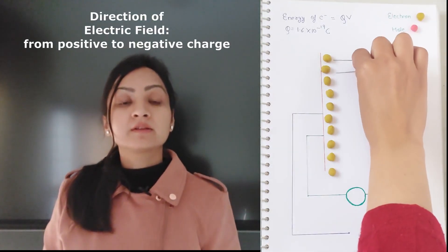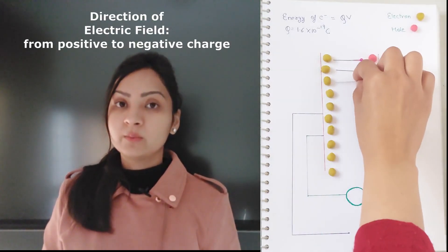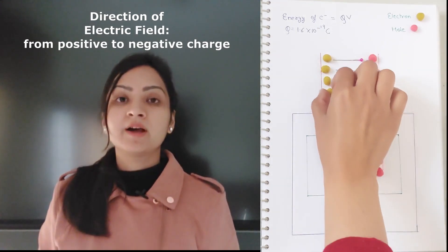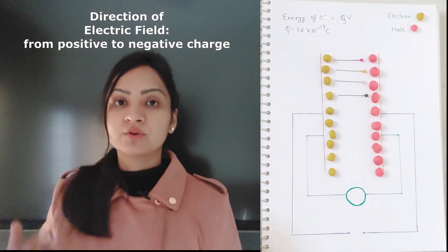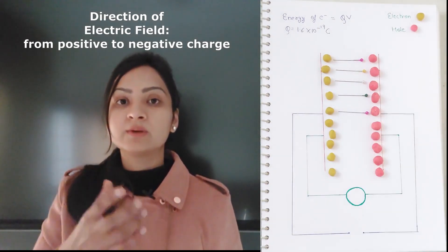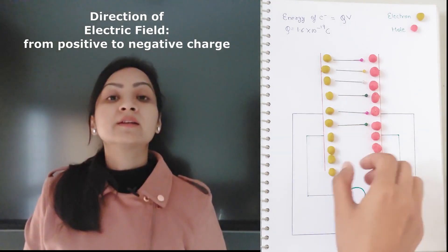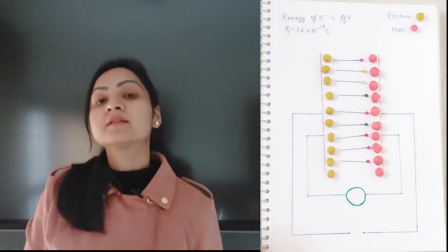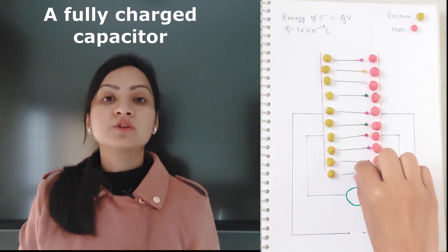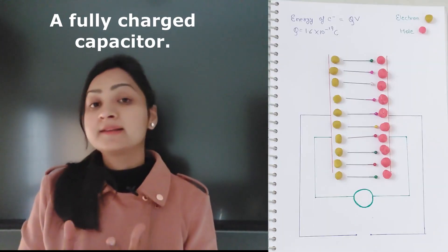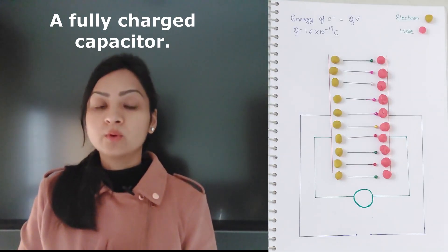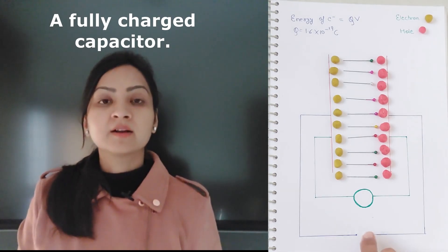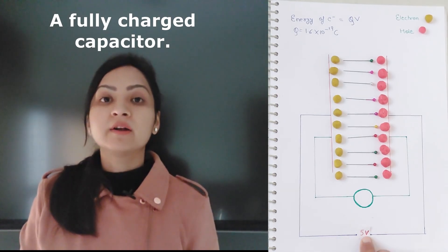Conventionally, holes are assigned an equal and opposite charge to that of electrons. Next is the direction of the electric field — it's always directed from positive to negative charge. So it will be directed from holes towards electrons. As you can see, all the electric field lines are pointing in the same direction. This is a fully charged capacitor.